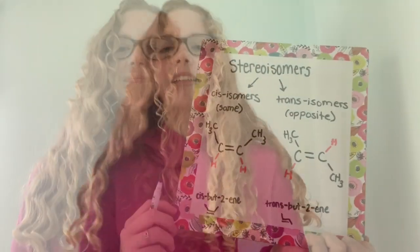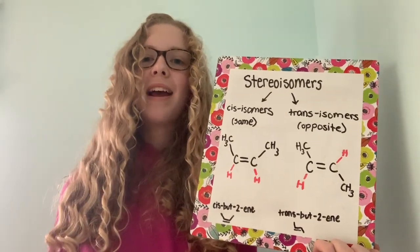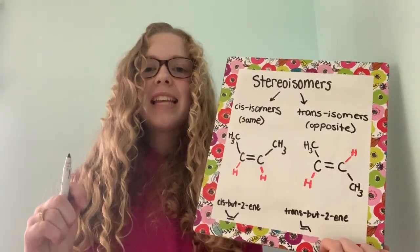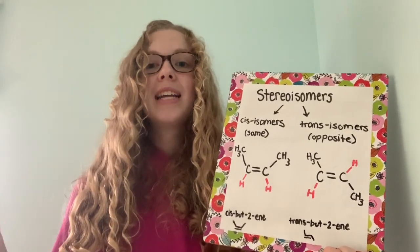Cis, trans, and EZ naming are three concepts which can be a bit difficult the first time you see them, but I'm going to simplify it and hopefully you'll understand by the end of the video. Today we're going to be talking about cis and trans isomers, which only apply to alkenes and are two types of stereoisomers.